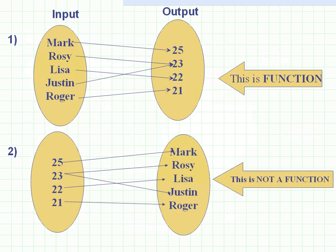Now let's study different cases. In the first case, when we have input as names and output as ages: putting in Mark gives a single output of 25; putting in Rosie gives 23; putting in Lisa gives 22; putting in Justin gives 23; and for Roger we get 21. Here we understand that for each single input we have a single output.